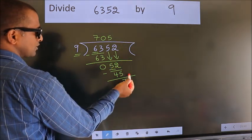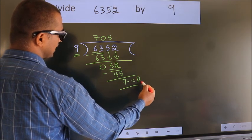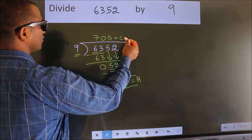No more numbers to bring it down, so we stop here. This is our remainder. This is our quotient.